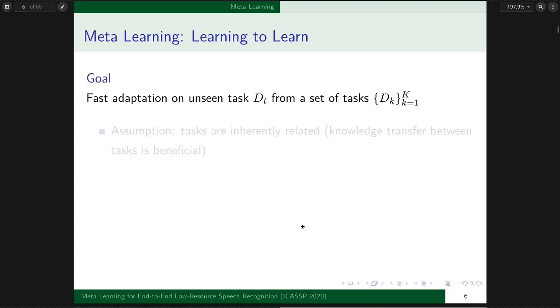The goal of Meta Learning is to utilize a set of tasks D1 to Dk to achieve fast adaptation on unseen task Dt. The assumption is that tasks are inherently related, so it will be beneficial to transfer knowledge between tasks.